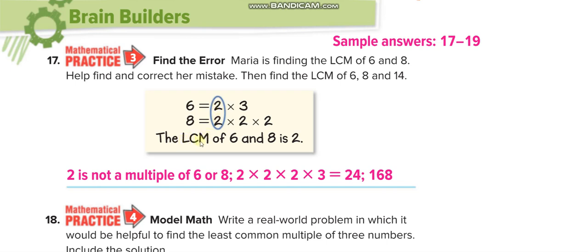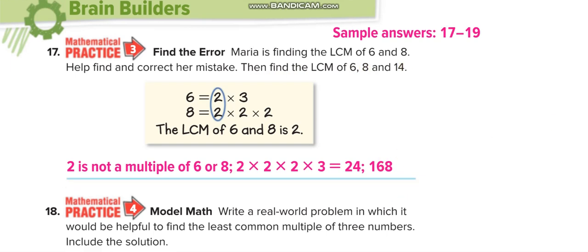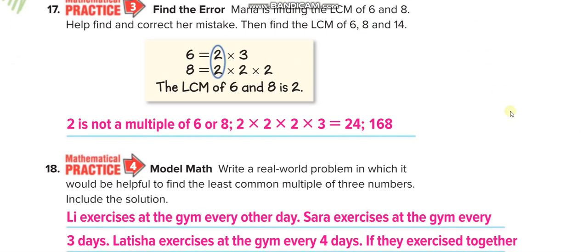The mistake is saying that 2 is the LCM — 2 is the GCF, not the LCM. The least common multiple of 6 and 8 is 24, not 2. They also want you to find the LCM of 6, 8, and 14, which is 168.